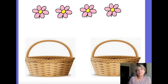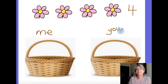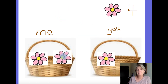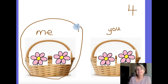Let's have a look at the flowers. How many flowers are there? Easy, isn't it? Four. There are four flowers. So I want to halve the flowers — half for me and half for you. How many flowers will we get each? Let's do it. One for me, one for you, one for me, one for you. We get two each. So what is half of four? Yeah — half of four is two.